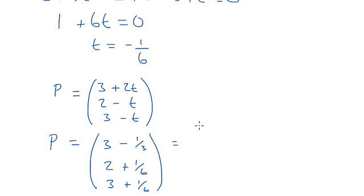So that gives us the components: 3 minus 1 third, 2 plus 1 sixth, and 3 plus 1 sixth. So that's P.